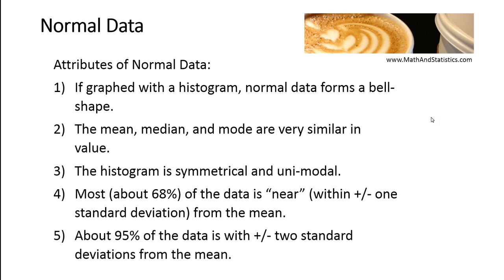A very good example of normally distributed data is the height of adult females. Most adult females are of a similar height, so they're all clustered around the mean. A few are taller and a few are a little bit shorter. Even fewer are considered tall or short, and very, very few are super tall or super short. When you create a histogram of adult female height, it ends up being bell-shaped and symmetrical, with one mode in the center. The mean, median, and mode are going to be very similar in value — these are all attributes of normal data.